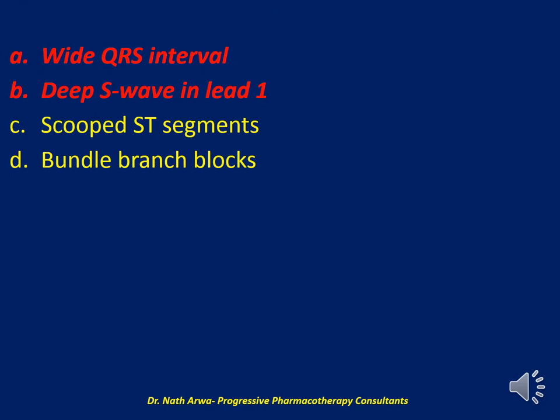Both A and B would be observed — a wide QRS interval with a deep S wave in lead one. Amitriptyline, a tricyclic antidepressant, its toxicity may cause a widening of the QRS interval and a rightward rotation of the terminal QRS axis, showing up as a deep S wave in lead one, due to inhibition of the cardiac fast sodium channels. Sinus bradycardia, PR prolongation, variable AV block, junctional rhythm, and bundle branch blocks are typically seen with non-dihydropyridine calcium channel blockers.